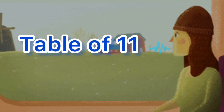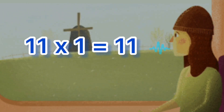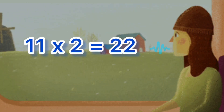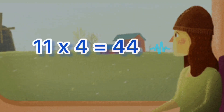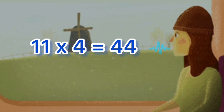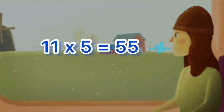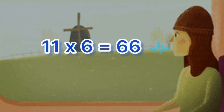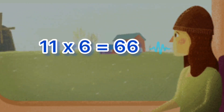Table of eleven. Eleven ones are eleven. Eleven twos are twenty-two. Eleven threes are thirty-three. Eleven fours are forty-four. Eleven fives are fifty-five. Eleven sixs are sixty-six.